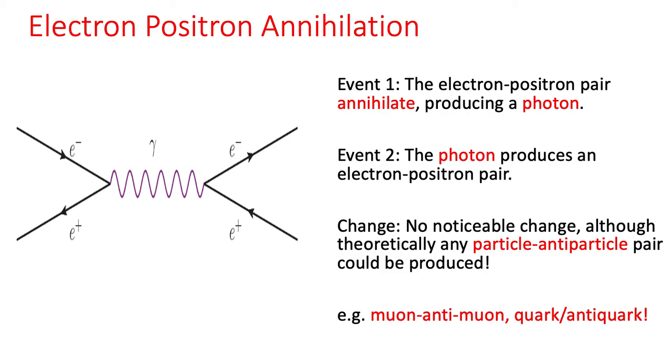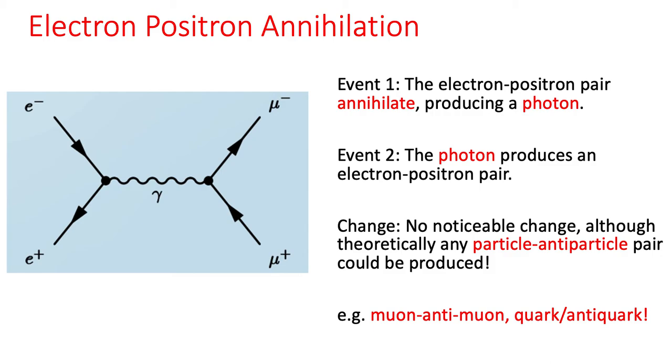It could be a muon and an anti-muon, or a quark and an anti-quark. Let me show you this example. Here you can see the same idea. On the left-hand side, we've got a photon in the middle. That's our boson.